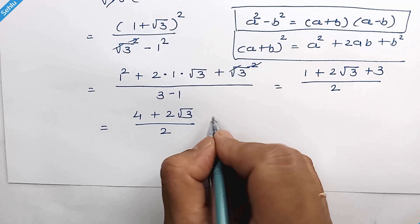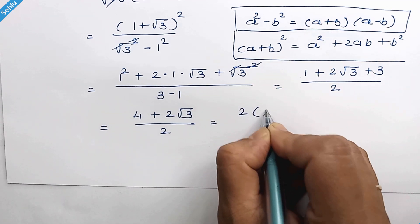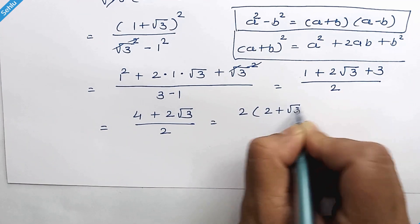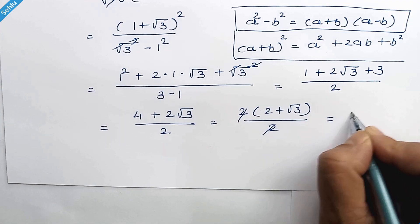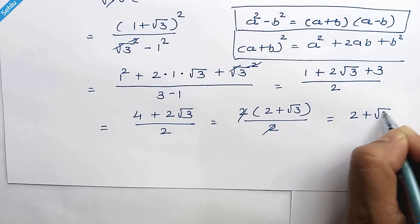Factor out 2 from here. The 2 gets cancelled out, so we have 2 plus square root of 3.